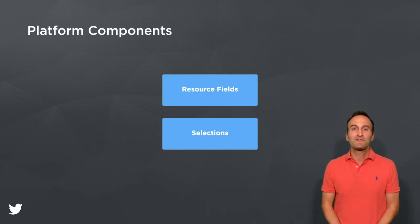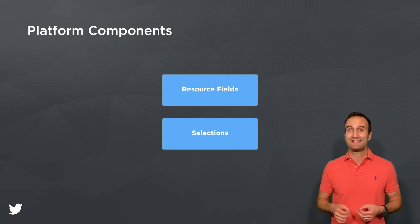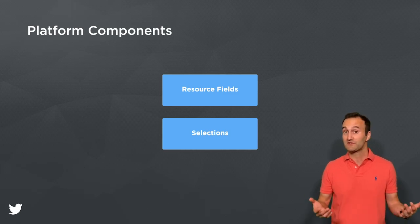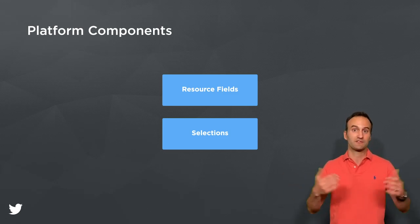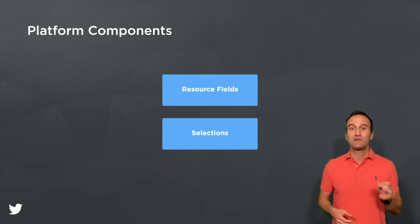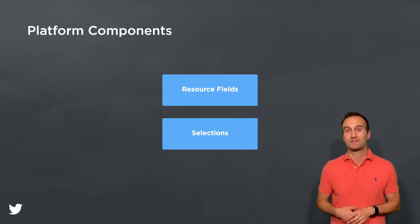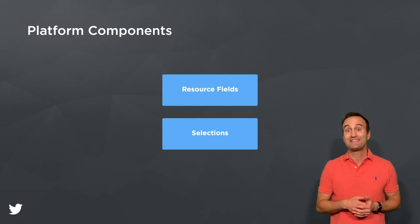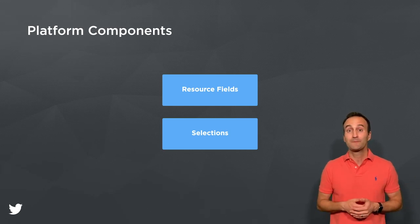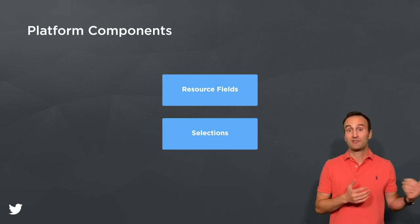Resource field components are used to create the core resources in our systems — for example, tweet resources and user resources. And selection components are used to define how to find resources — for example, tweet lookup by ID selection or tweet lookup by search selection.